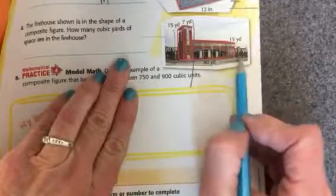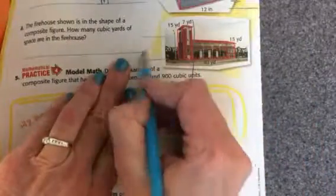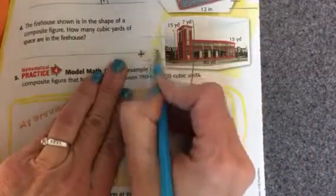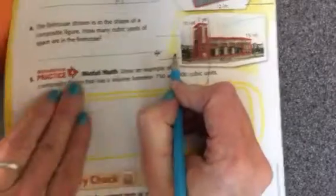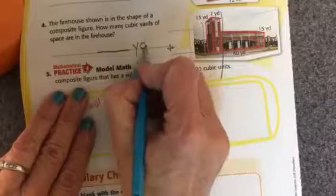And then I'll do 15 times 12 times 40, and I'll have my second number. And I'll add those two numbers together. Once I add them together, that's my answer. And then I will add yards cubed.